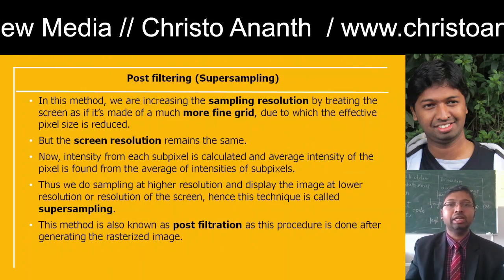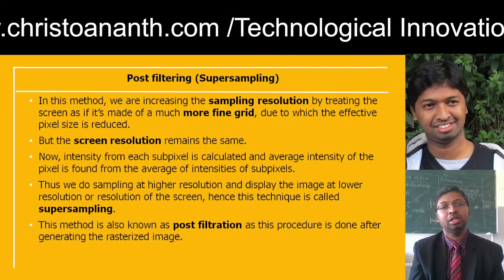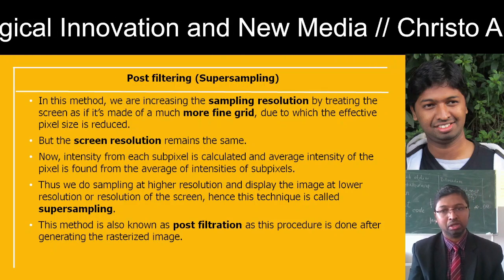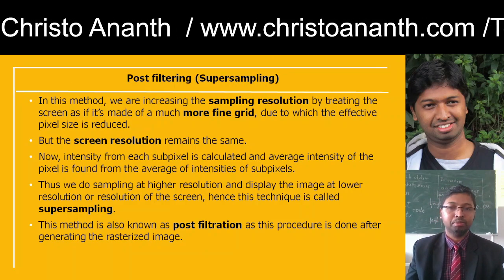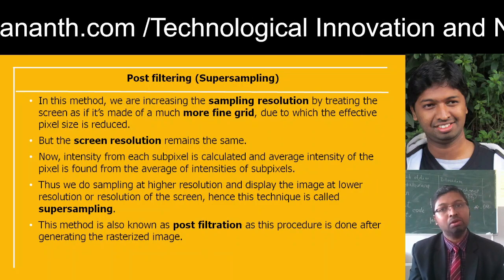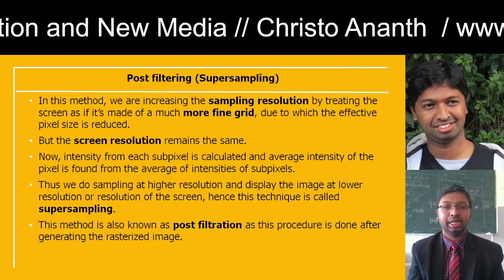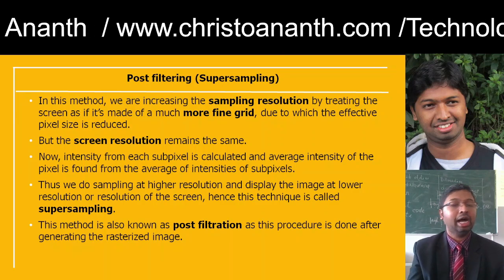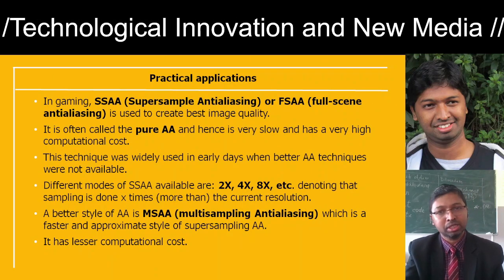One method is increasing the sampling resolution — confining to a finer grid so pixel size is reduced. The screen resolution remains the same, but we sample at a higher resolution and display at the screen's lower resolution. This is super sampling — using an optimum sampling resolution to generally ignore jaggies. This is a post-filtration method done after generating the rasterized image.